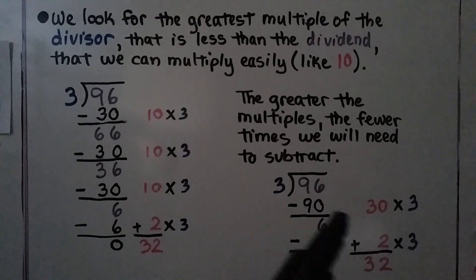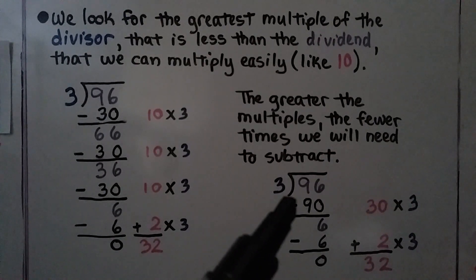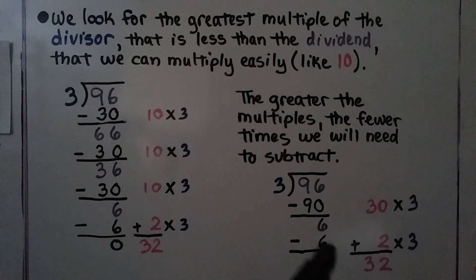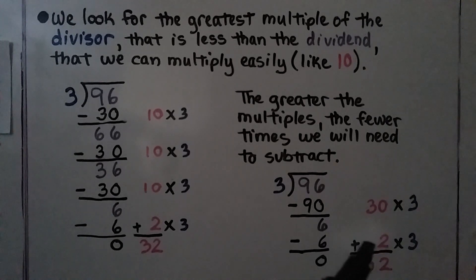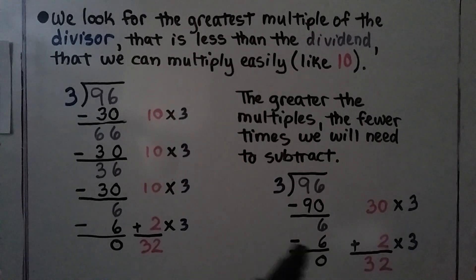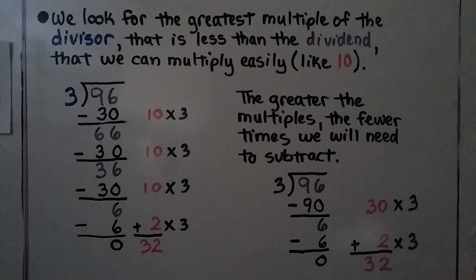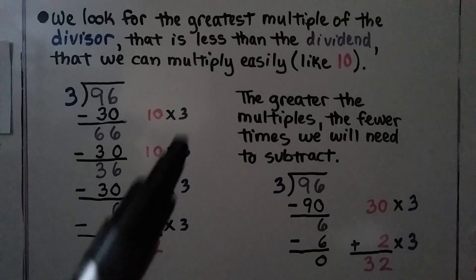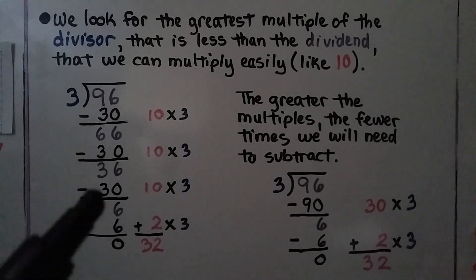If we think, well, 3 times 3 is 9, so 3 times 30 is 90, we can take away a 90. That leaves a 6. And 2 times 3 is 6. We take away that 6 and we're at 0. So our partial quotients are 30 plus 2. It's 32 — just like we got before, except we only had to subtract twice and only had to add two partial quotients, because our multiples were greater: we used a 90 instead of 30, 30, and 30.